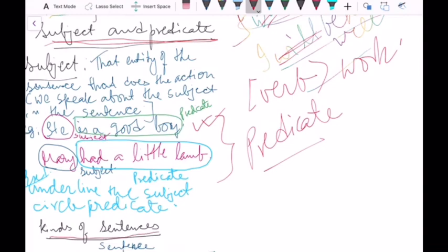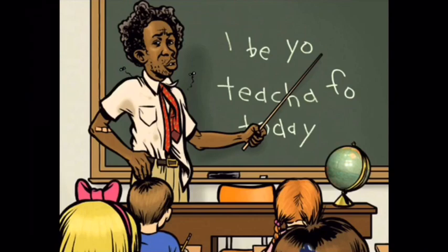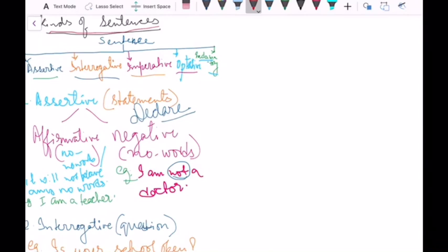You can see written here: kinds of sentences. Hopefully you have understood what is a sentence and why we call it a sentence, as covered in the previous video. Now we move on to the kinds of sentences.